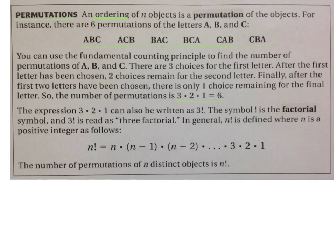3 times 2 times 1 is something that we can write as 3 factorial. This little exclamation point means factorial. It doesn't mean a really loud 3. In general, N factorial is defined where N is a positive integer. It's N times the next lower one times the next lower one, and so on, until you get to 1. The number of permutations of N distinct objects is always N factorial.